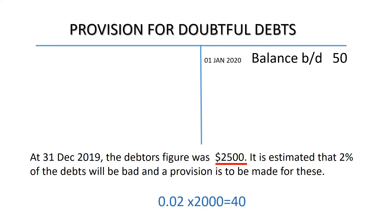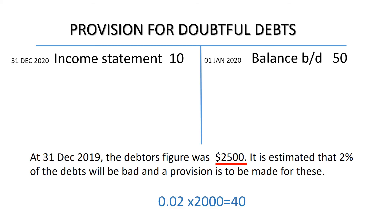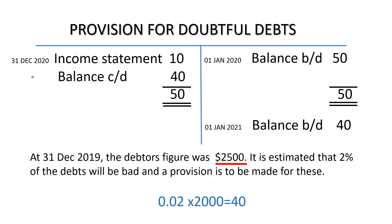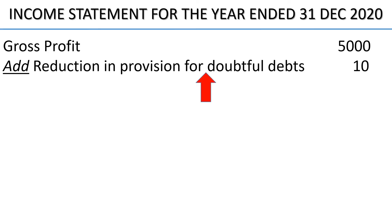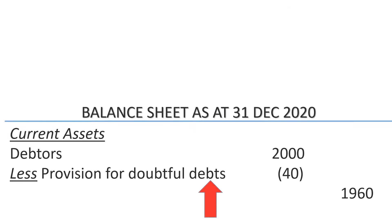In the provision for doubtful debts account, the opening balance is $50 and it is a credit balance. Since this account has a credit balance, to decrease its balance the account has to be debited. In this case, the provision for doubtful debts has decreased by $10, therefore it is debited with this amount. The account is balanced off and the decrease is recorded in the income statement where it is added to the gross profit as income. In the balance sheet, the provision is deducted from debtors.